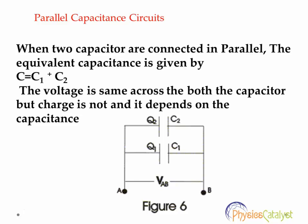The parallel capacitance arrangement is shown in the figure. The C1 and C2 capacitors are arranged in parallel. As we can see from the figure that voltage is same across both the capacitors but the charge is not and it depends on the capacitance.